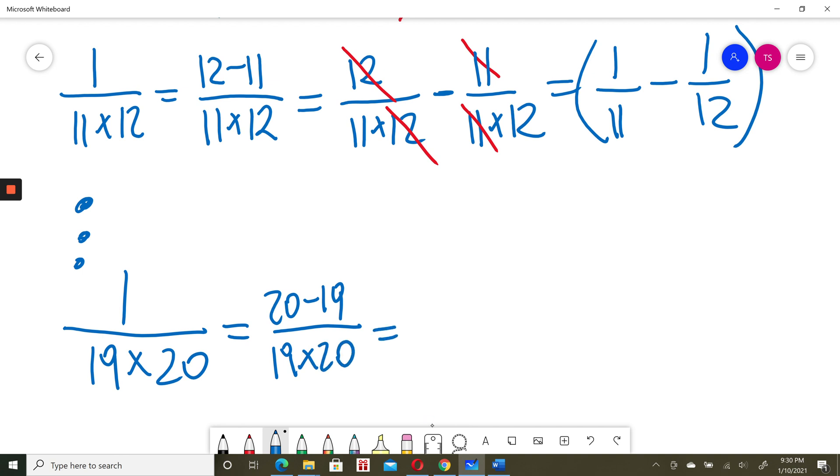So this will be equal, I can simplify 20, I can also simplify 19. And so this will be equal to 1 divided by 19 minus 1 divided by 20.